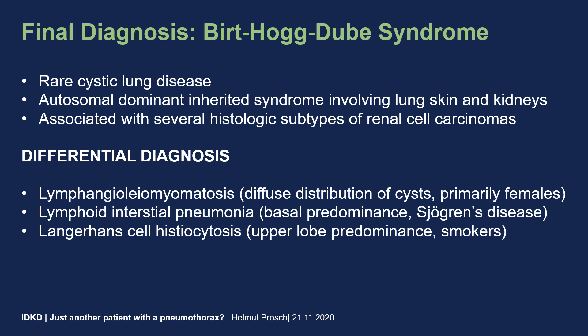The other differential diagnosis would be lymphoid interstitial pneumonia, also a cystic lung disease with thin-walled cysts. Like in Birt-Hogg-Dubé syndrome, you frequently see a basal predominance. But this disease is frequently seen in the context of Sjögren's disease, lupus, or HIV. So the clinical context is quite different. Only very rarely is lymphoid interstitial pneumonia seen as an idiopathic disease.